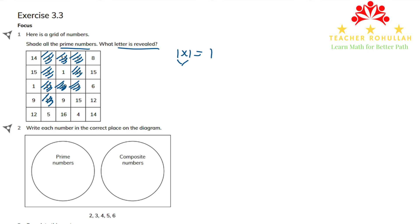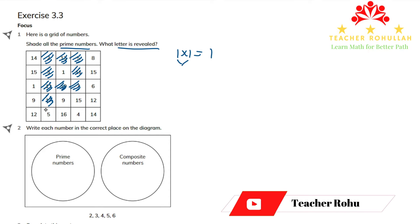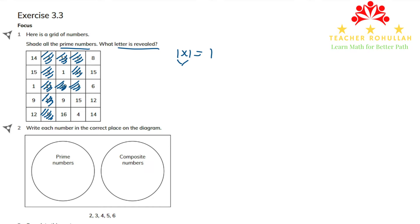9, 15, and 12 are not prime numbers. 5 is a prime number. 16 is not a prime number. The letter revealed by shading all prime numbers is the letter P.